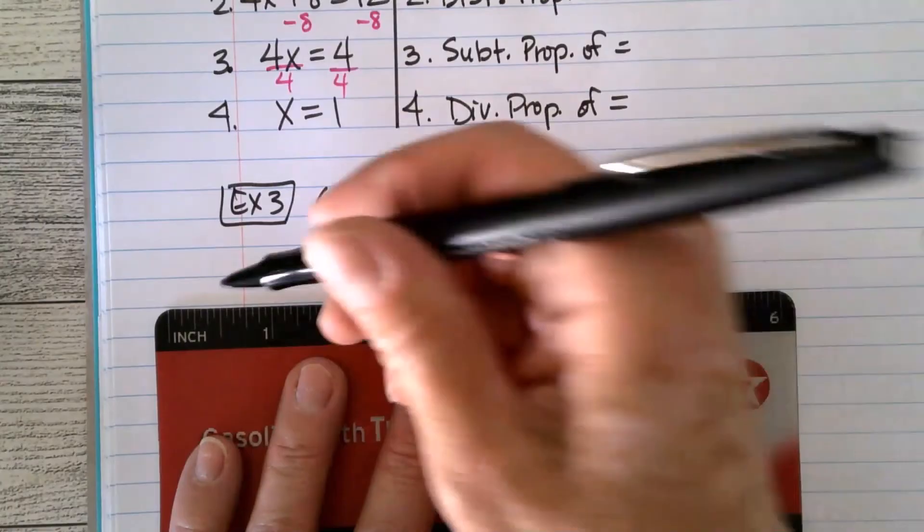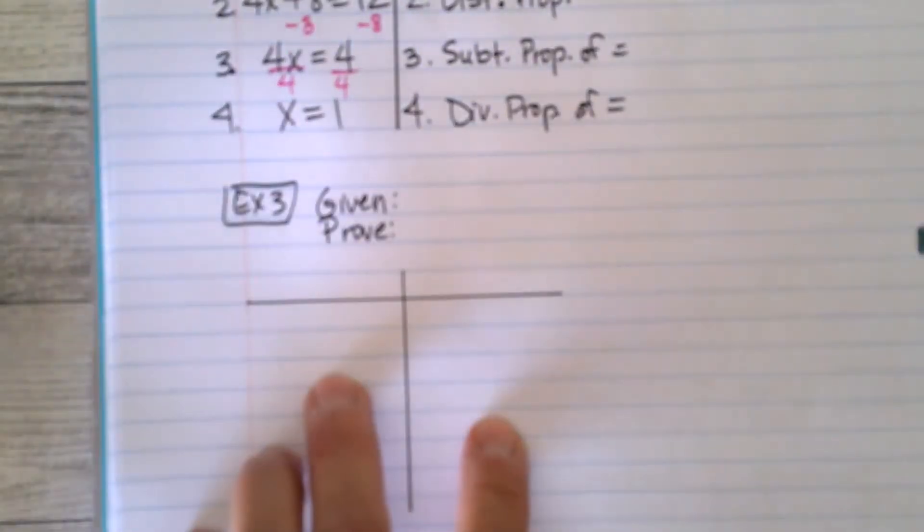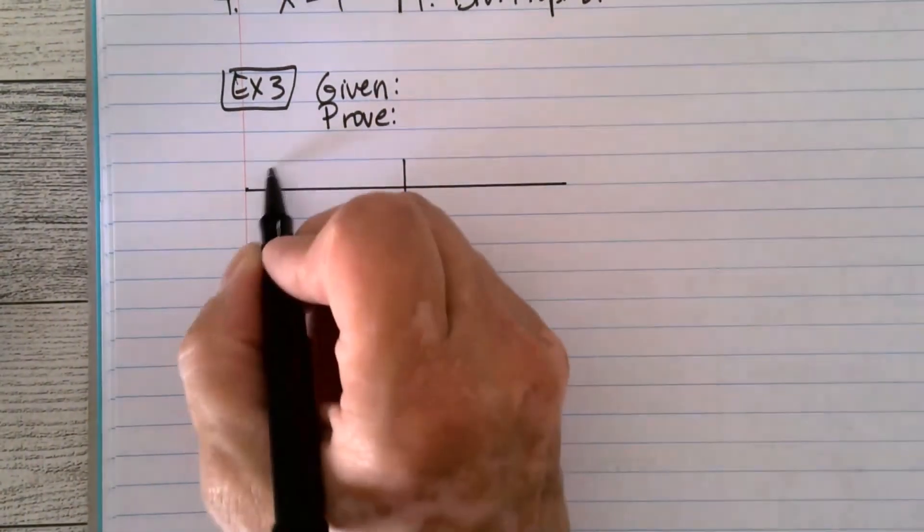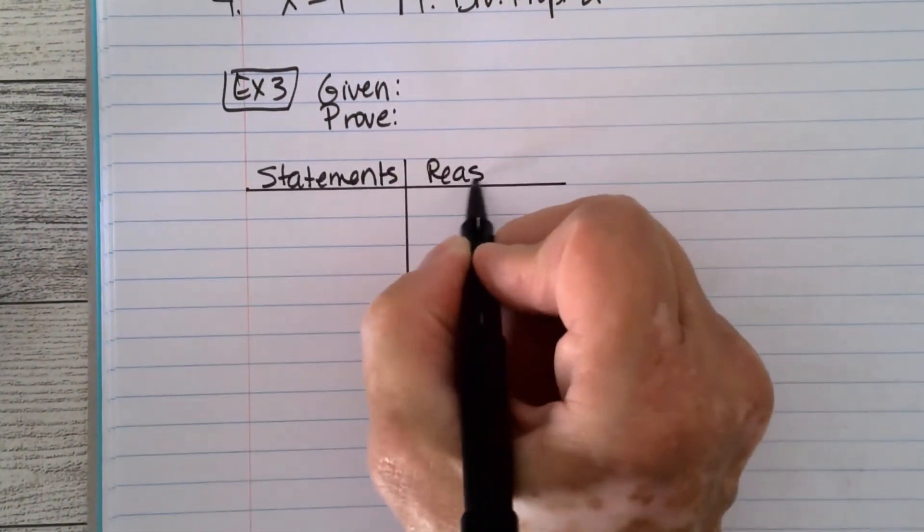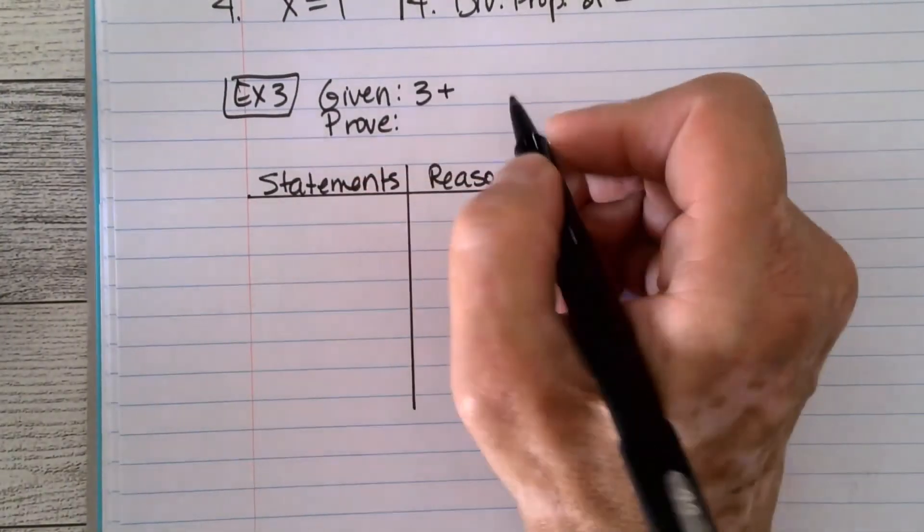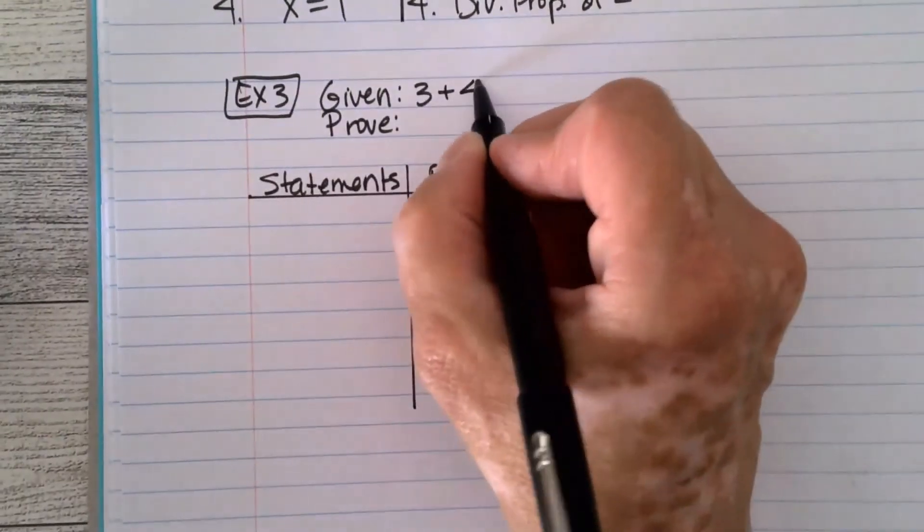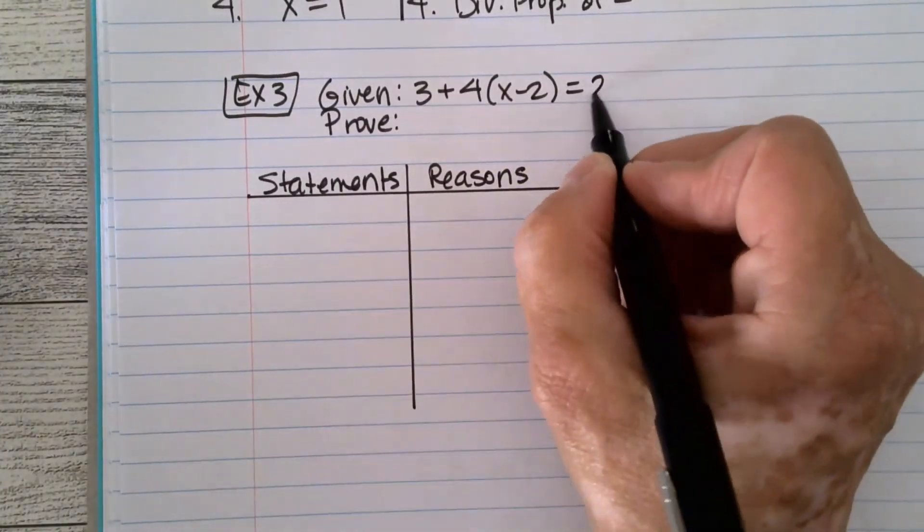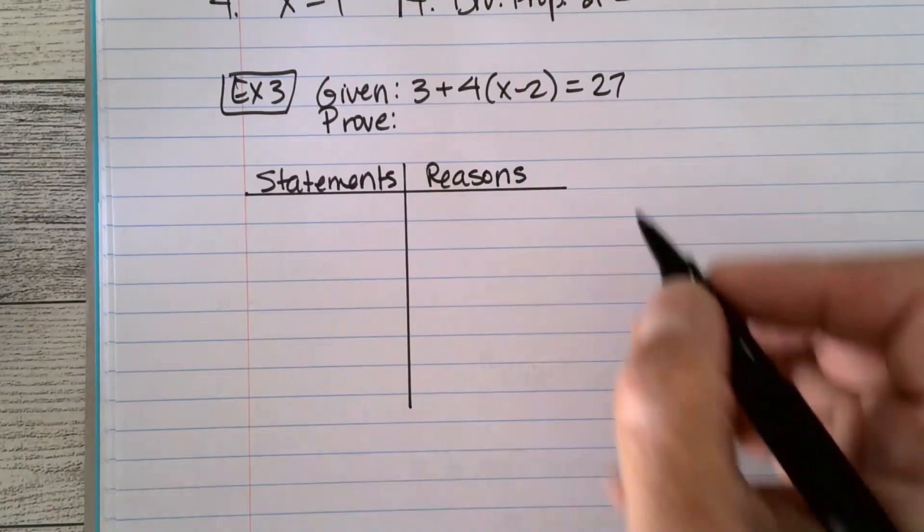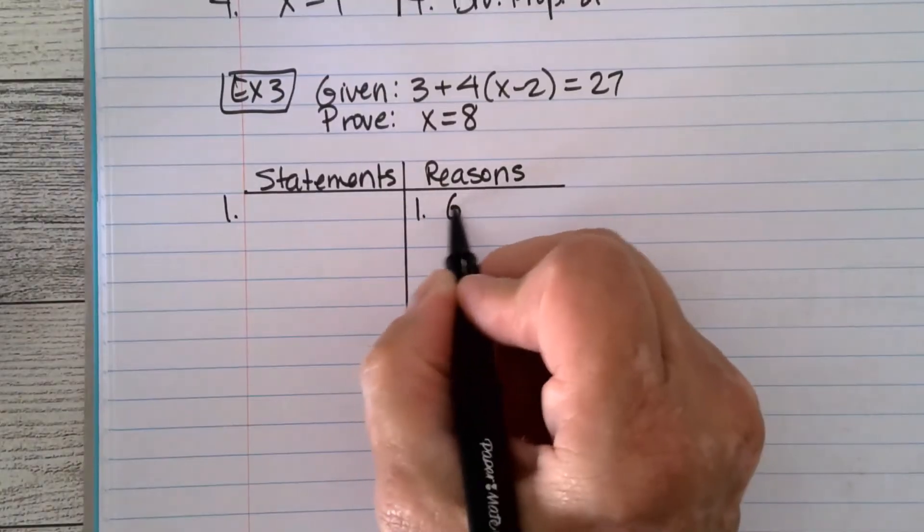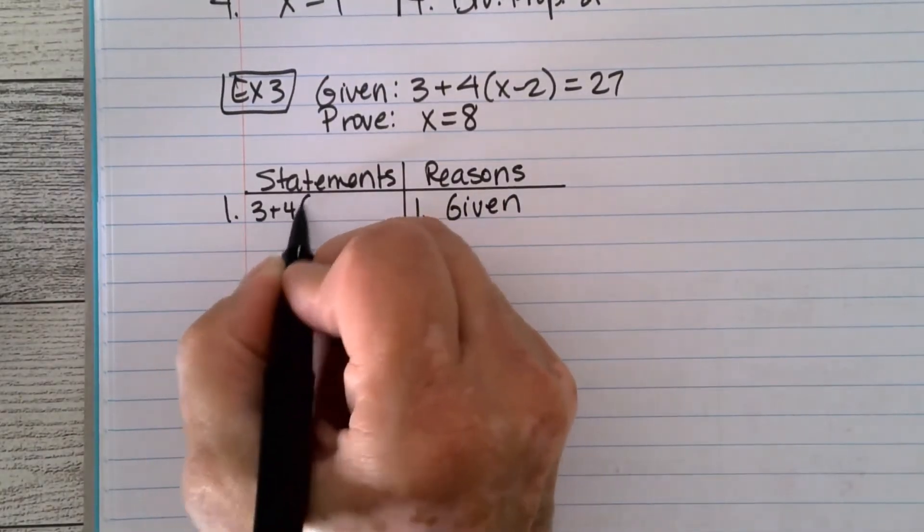Anybody want to ask me any questions about this so far? One more example and then you're going to do some triads. We're going to do given. We're going to do prove. And we need to make a chart. And I never know exactly how big to make the chart because you can have more steps. You can take as many steps as you want to take. Some things go pretty quick. But if you have one that's kind of like complicated, like this one, given 3 + 4(x - 2) = 27. You have something like that. There's a lot of different ways you can do that. So how many steps it takes, how many statements you make, that doesn't matter. We're going to prove that x = 8.